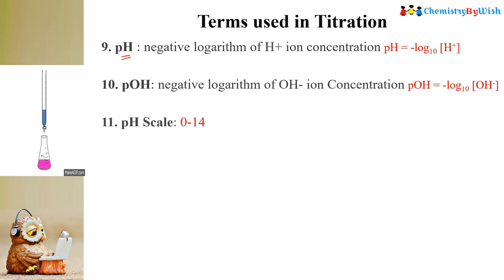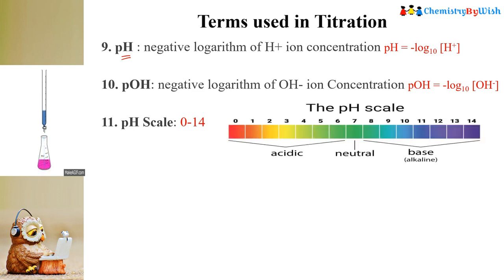The next term is the pH scale. The pH scale indicates whether a solution is acidic, basic, or neutral. Below 7 is acidic, at 7 it is neutral, and from 7 to 14 it is basic or alkaline. So this is the pH scale.